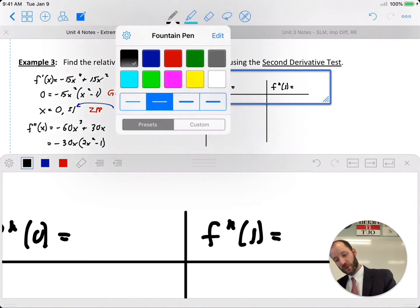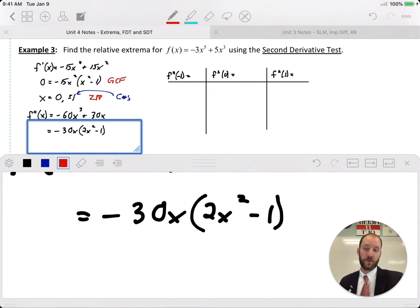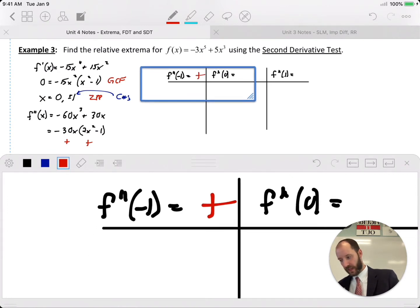We're going to look at those three. So let's plug into the factored form of the second derivative. Negative one: negative one and negative thirty, that's going to be positive. Negative one into x squared minus one, that's also positive. So overall positive, we have concave up.